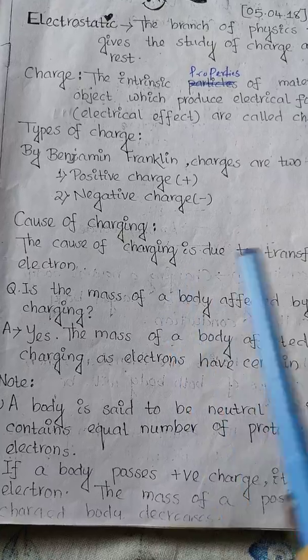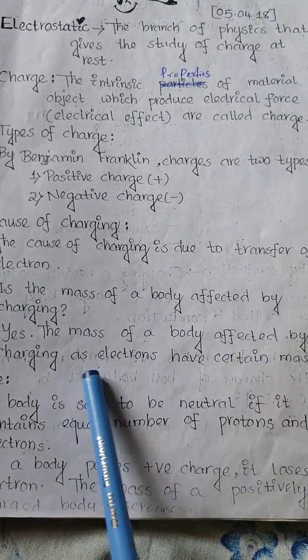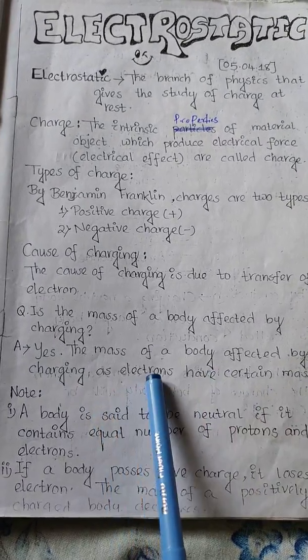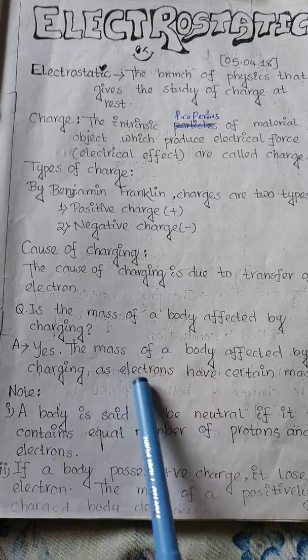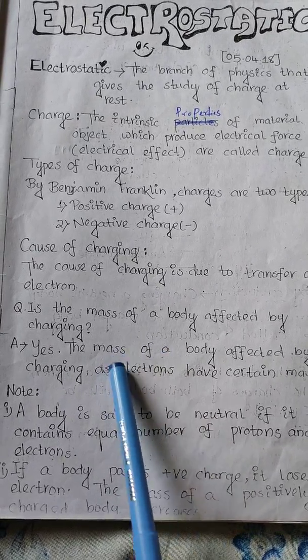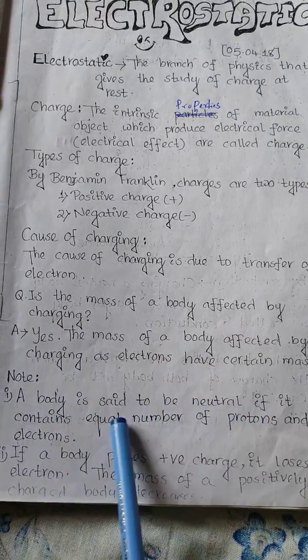If a body gains electrons, the mass of the body is affected by charging, as electrons have certain mass. In many cases though, a huge number of electrons are lost, so the mass change is very small and difficult to measure.